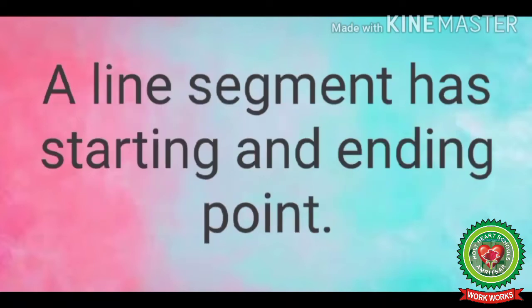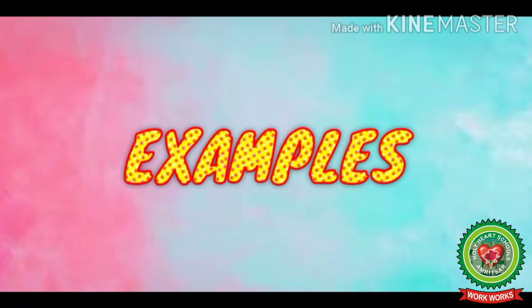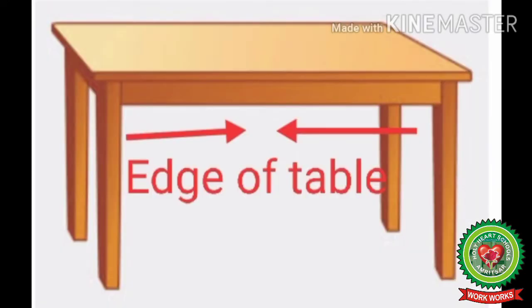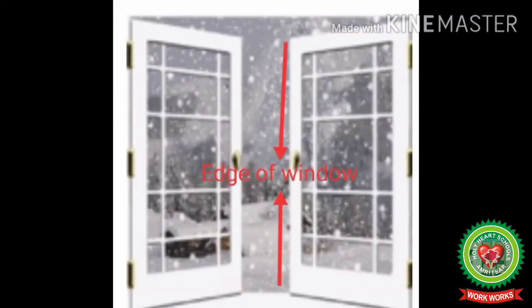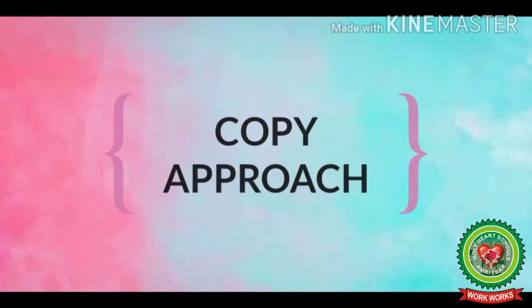A line segment has a starting and ending point. This is a line segment and we cannot extend it from any side. It can be named as AB in capital letters. Some examples of a line segment are edge of scale, edge of table, edge of window, edge of door, etc.